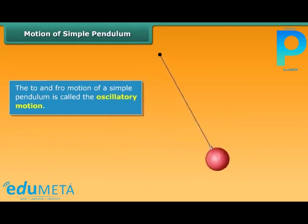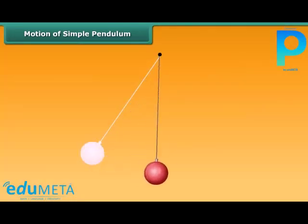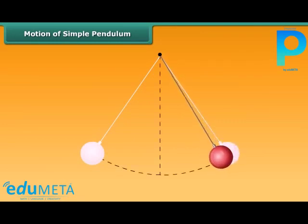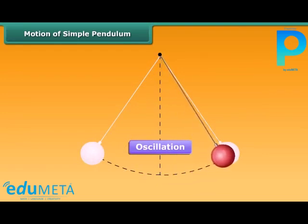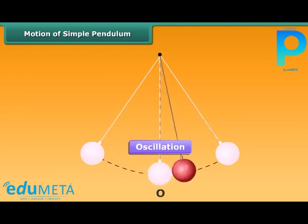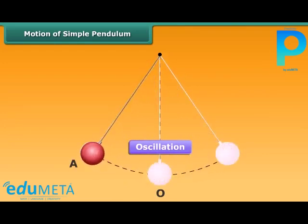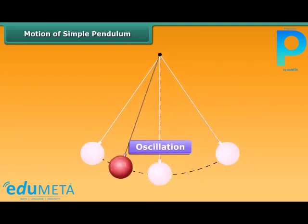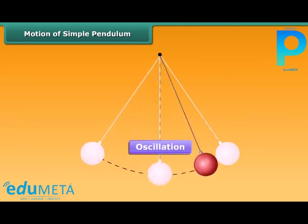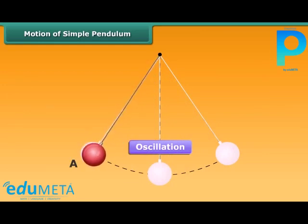This to and fro motion of a simple pendulum is called the oscillatory motion. One full to and fro motion of the pendulum is called an oscillation. The pendulum completes one oscillation when its bob, starting from its equilibrium position O, moves to one extreme position A, from there to the other extreme position B, and then back to O. Alternatively, an oscillation can also be measured as the movement of the bob of a pendulum from one extreme position A to the other extreme position B and back to A.